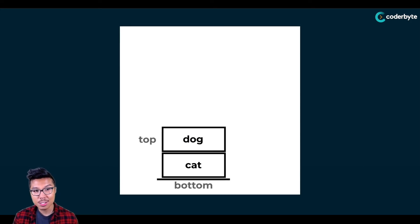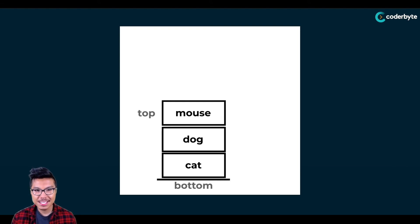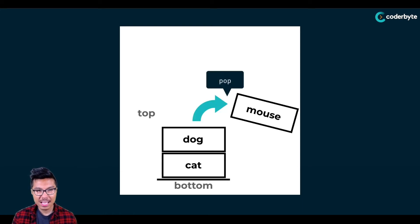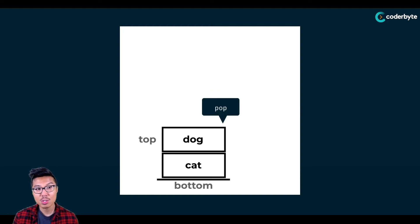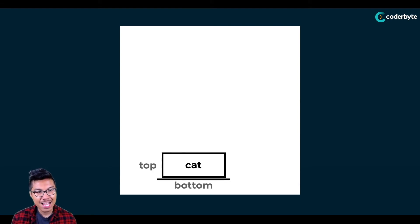Right now, dog is at the top of the stack. Let's do one more push — let's say I push 'mouse'. So here's my stack of three things with mouse on top. Now let's say I wanted to remove items from my stack — we pop items from the top. So if I pop, that means I'm removing mouse. You can't choose which item you remove from the stack; you are necessarily always removing the tippy top. So mouse is gone, dog is back at the top. If I pop again, dog is removed, and cat is now the only item in the stack.